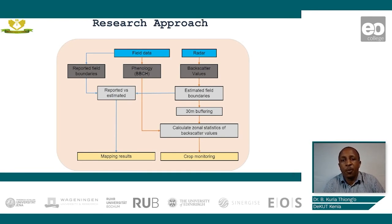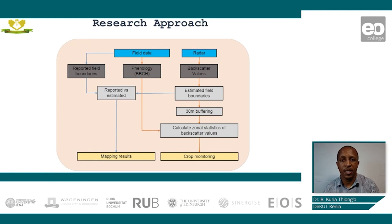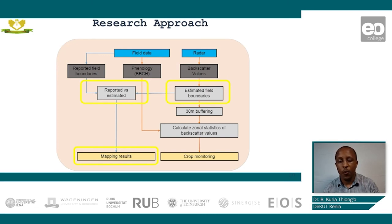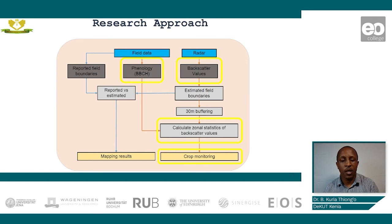The proposed research approach will combine field data and radar data to produce mapping results and crop monitoring results. From the field data, we shall extract the reported field boundaries and the crop phenology. From the radar data, we shall extract the backscatter values. Using the reported field boundaries combined with the estimated field boundaries from the radar, we shall obtain our mapping results. The zonal statistics shall be calculated from the extracted backscatter values before being compared to the phenology collected from the field data, and these shall provide the crop monitoring data.